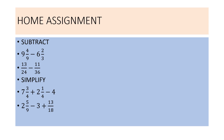Home assignment: Subtract — Question 1: 9 and 4 by 9 minus 6 and 2 by 3. Question 2: 13 by 24 minus 11 by 36. Simplify — Question 1: 7 and 3 by 4 plus 2 and 1 by 4 minus 4. Question 2: 2 and 5 by 9 minus 3 plus 13 by 8. With this we end the topic. Thank you.